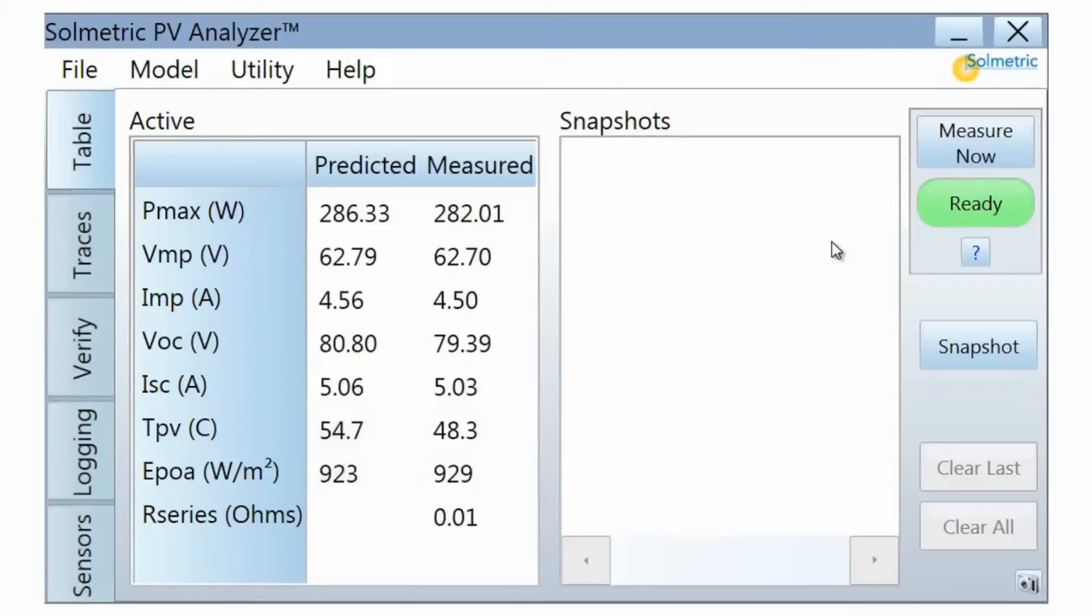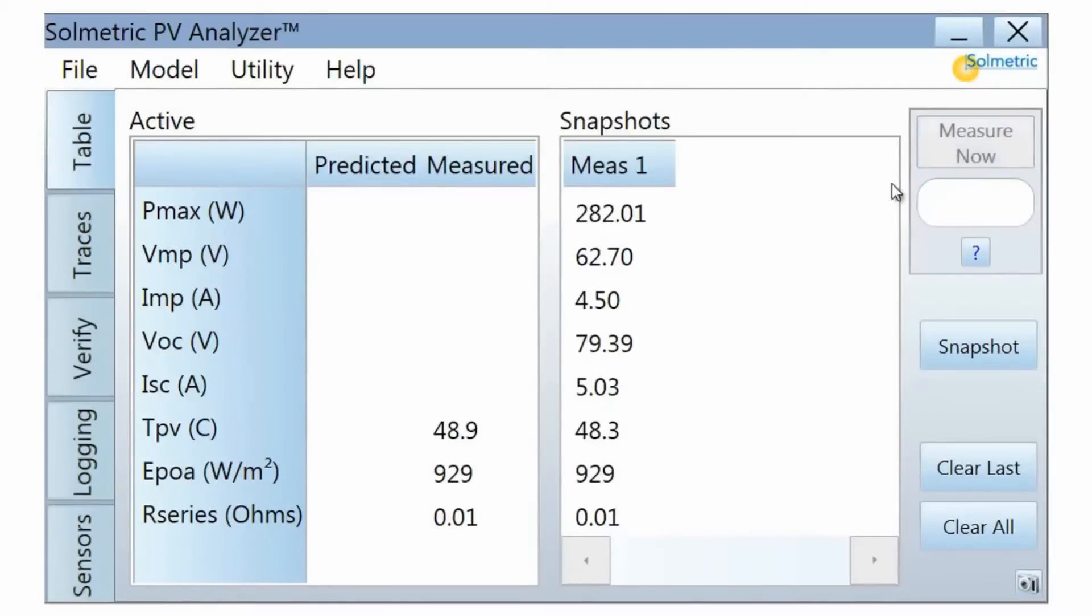You can temporarily save measurement results by pressing the Snapshot button. This feature is useful when you are comparing a sequence of measurements to one another.